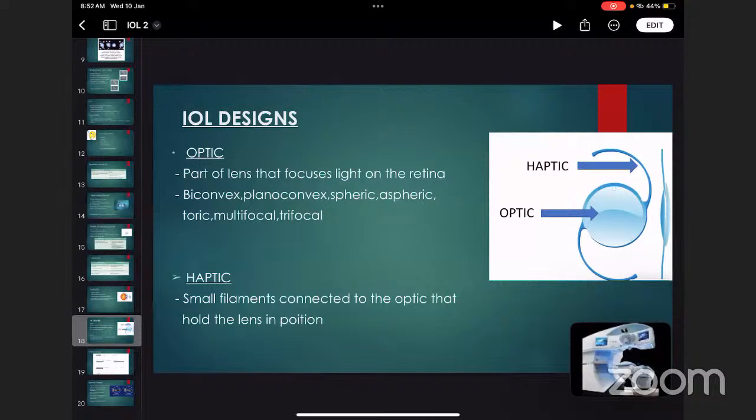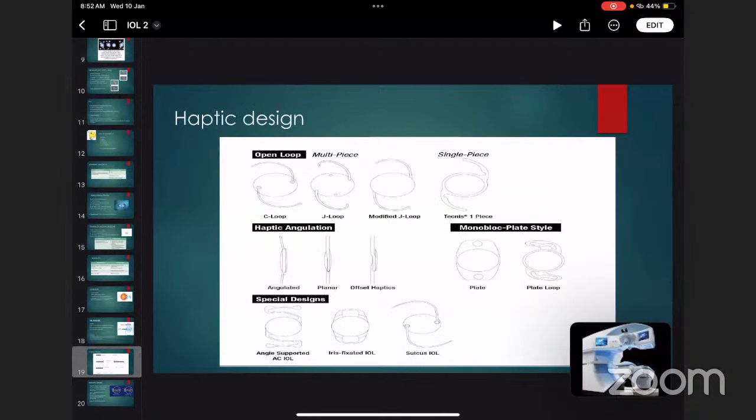IOL design: IOL is distributed as optic and haptic. Optic is the part of the lens that focuses light on the retina. There are multiple designs: biconvex, planoconvex, spheric, aspheric, toric, multifocal, and trifocal. In the haptic: small filaments connected to the optic that hold the lens in position. Different haptic designs include open loop with C loop, J loop, modified J loop, plate style, and angulated haptics.